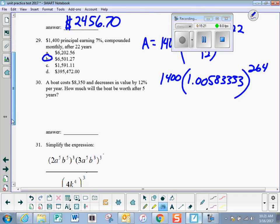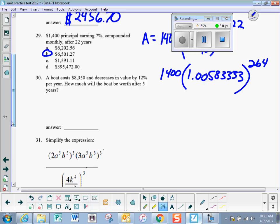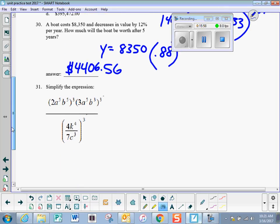Now we have an exponential decay, so it's going to equal the original amount times the decay factor, which would be 0.88, because if it's 12% you're losing, you would only have 88% of what you had before. And that is to the 5th power, so then I put that in my calculator, 83.50 times 0.88 to the 5th, and I get 4406. So you didn't quite lose half of it in 5 years, didn't quite lose half the value.